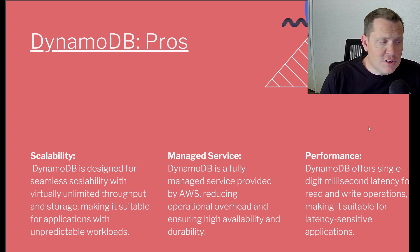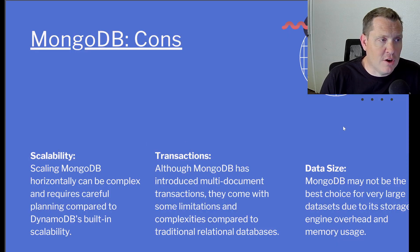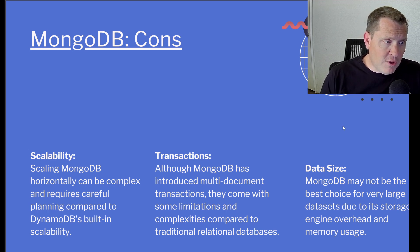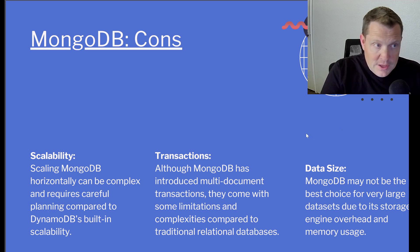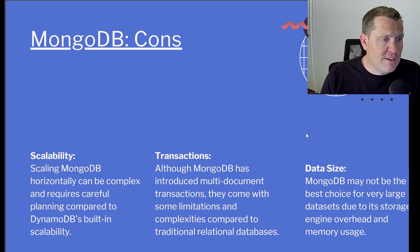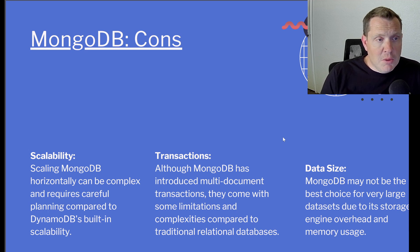When you stand each other up against each other, let's dive into the cons. The cons of MongoDB are: first, scalability — horizontal scaling can be complex and requires careful planning compared to DynamoDB's built-in scalability. Second, transactions — although MongoDB has introduced multi-document transactions, they come with limitations and complexities compared to traditional relational databases. Lastly, data size — MongoDB may not be the best choice for very large datasets due to its storage engine overhead and memory use.